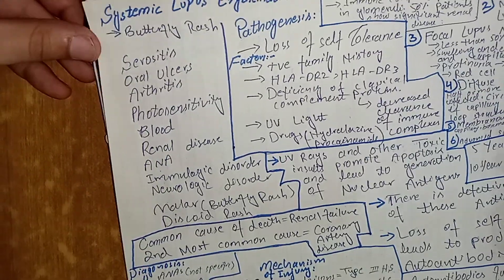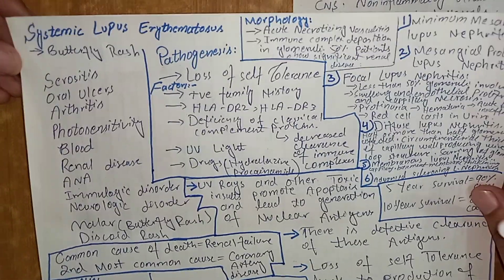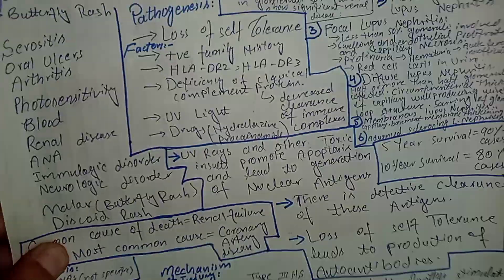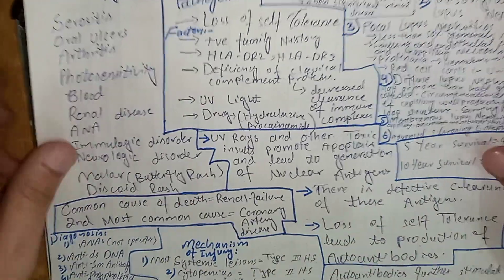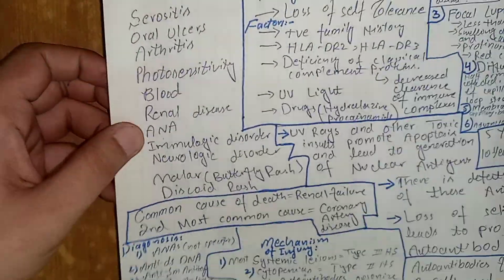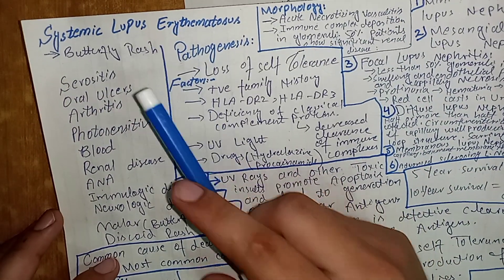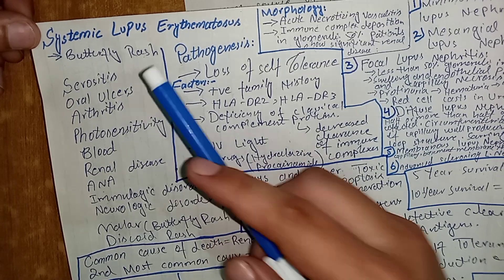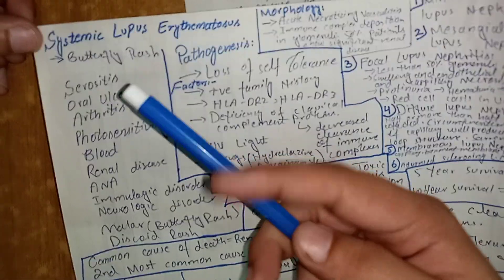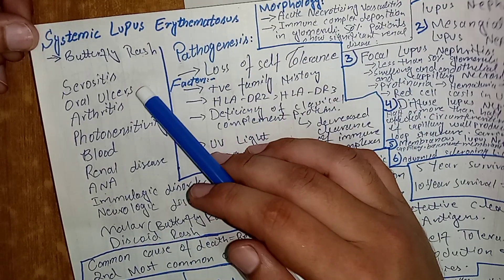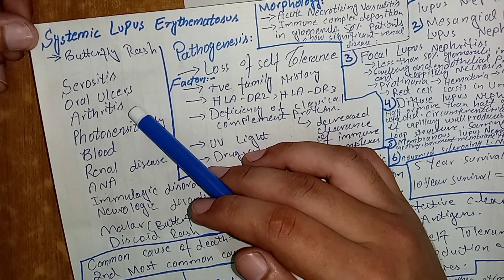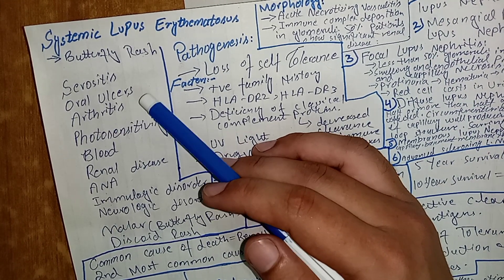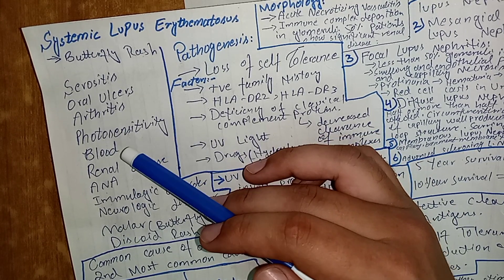Systemic lupus erythematosus is basically an autoimmune disease which affects multiple systems and multiple organs of the body. Common manifestations include butterfly rash, serositis — which includes pericarditis, pleural effusion, and pericardial effusion — oral ulcers, and arthritis.